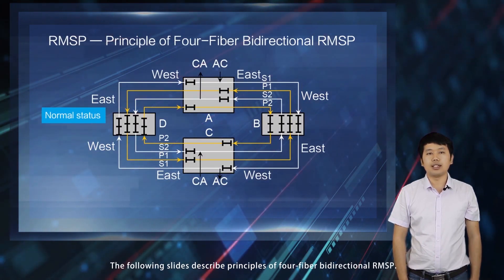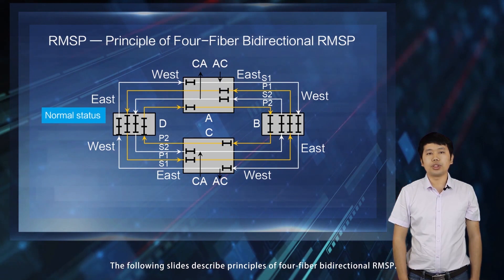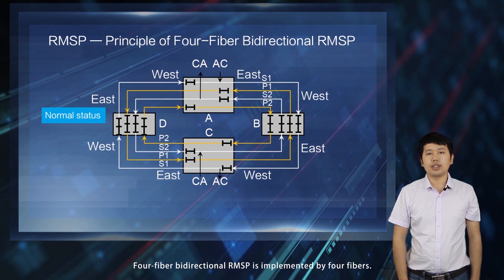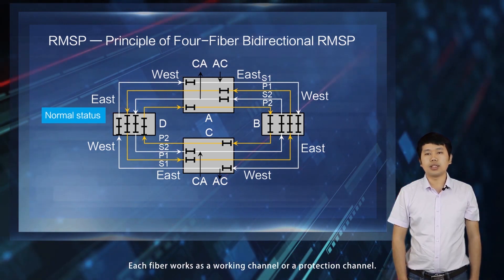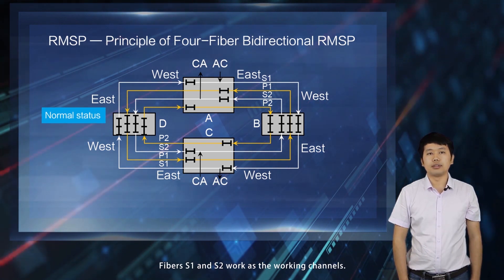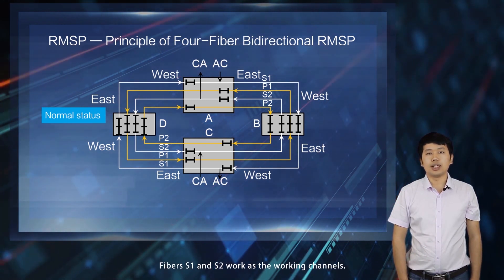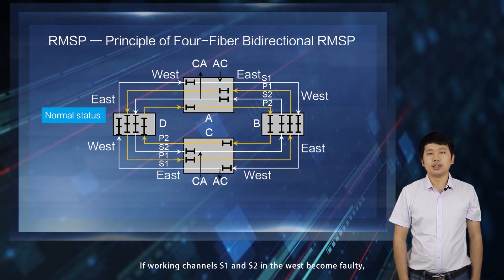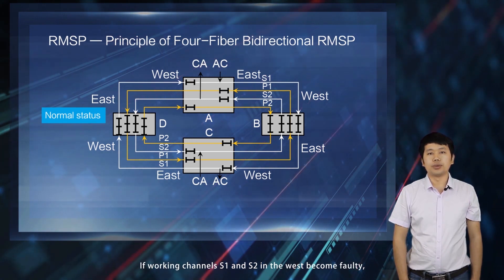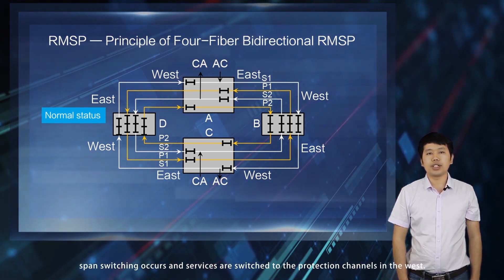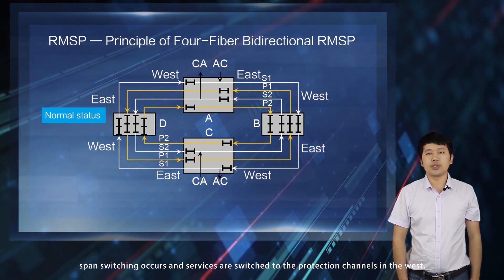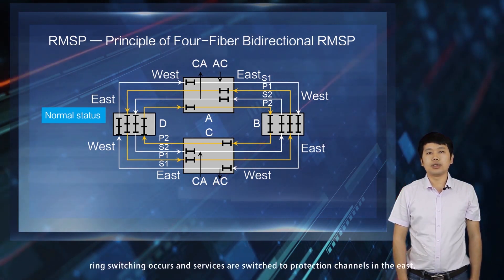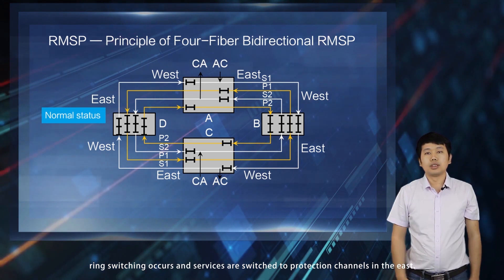The following slides describe principles of four-fiber bidirectional RMSP. Four-fiber bidirectional RMSP is implemented by four fibers, where each fiber works as a working channel or a protection channel. Fibers S1 and S2 work as the working channels, and fibers P1 and P2 work as the protection channels. If working channels S1 and S2 in the west become faulty, span switching occurs and services are switched to the protection channels in the west. If working and protection channels in the west all become faulty, ring switching occurs and services are switched to protection channels in the east.